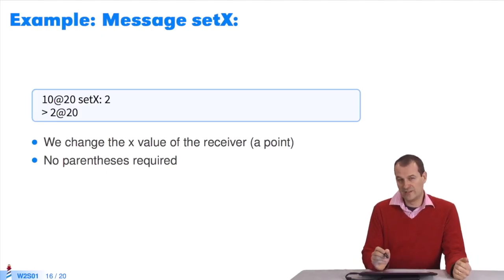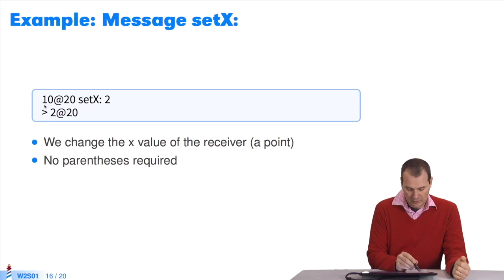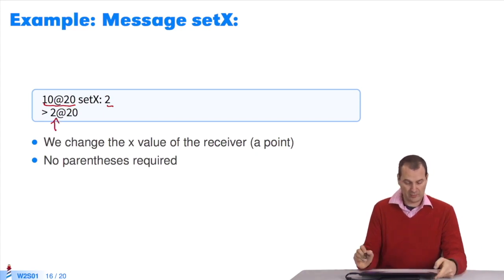For example, let's imagine I want to change the x value of a point. This is a point. It's a binary message. I write set x with an argument. It returns a point in which two has been changed. It doesn't look so hard, does it?